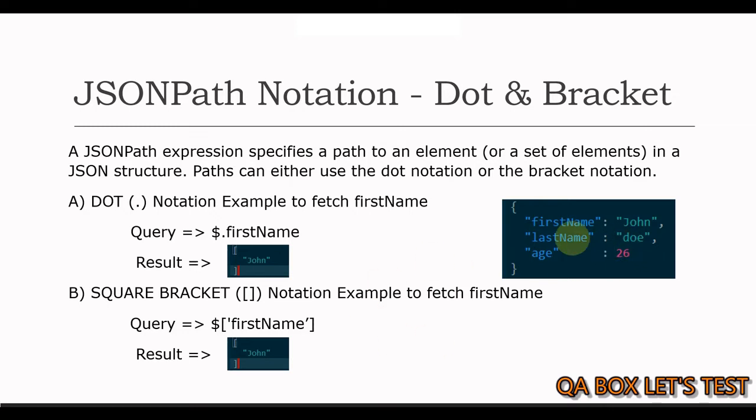To select the first name node from this given JSON dictionary, we can write dollar which represents the root element, dot is the notation and then the name of the property. So we say dollar dot firstName. This is your dot notation.